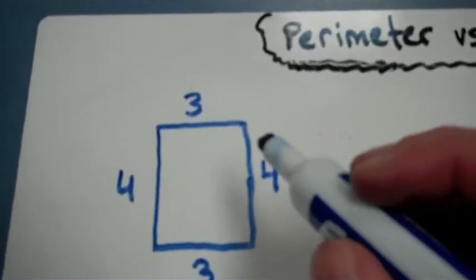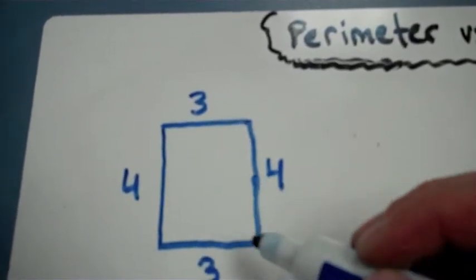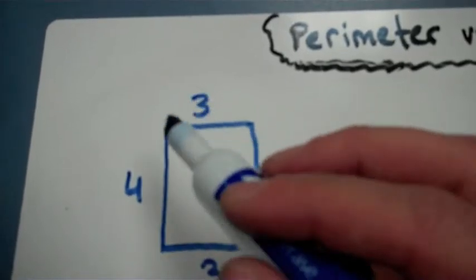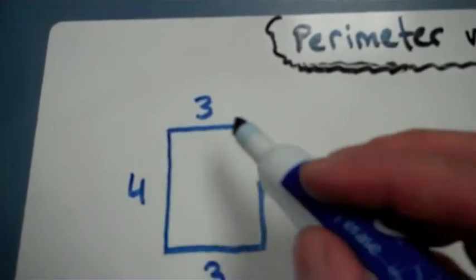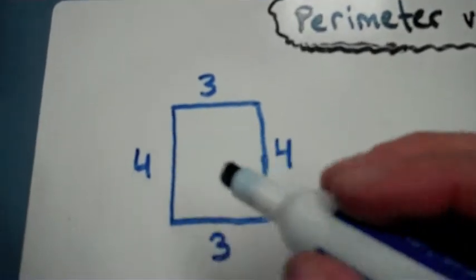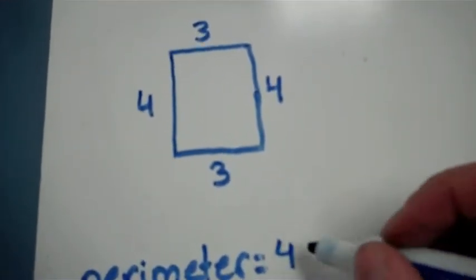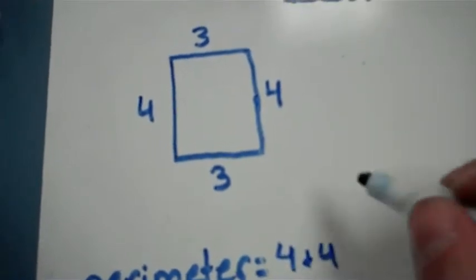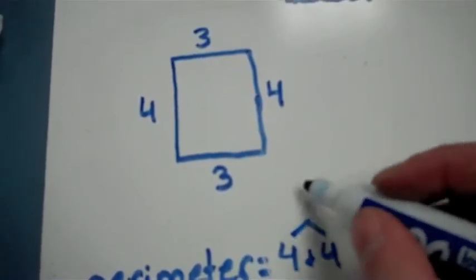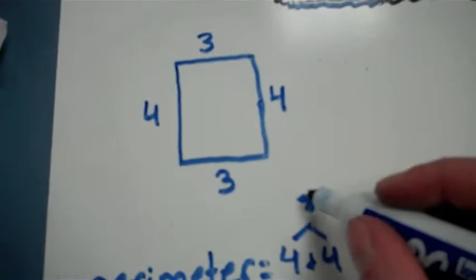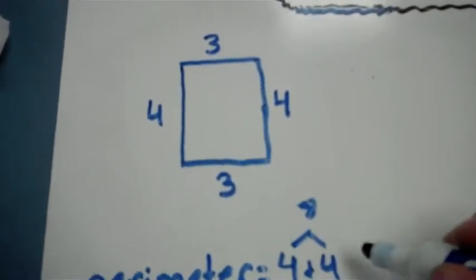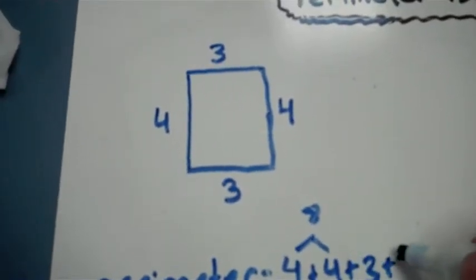Now the perimeter is the distance or length all the way around an object or figure. So starting from here, 3 plus 4 plus 3 plus 4. I'm just going to write that down here, but I think I'll add my 4's first. 4 plus 4 equals 8. And then I'll add my 3 plus 3.